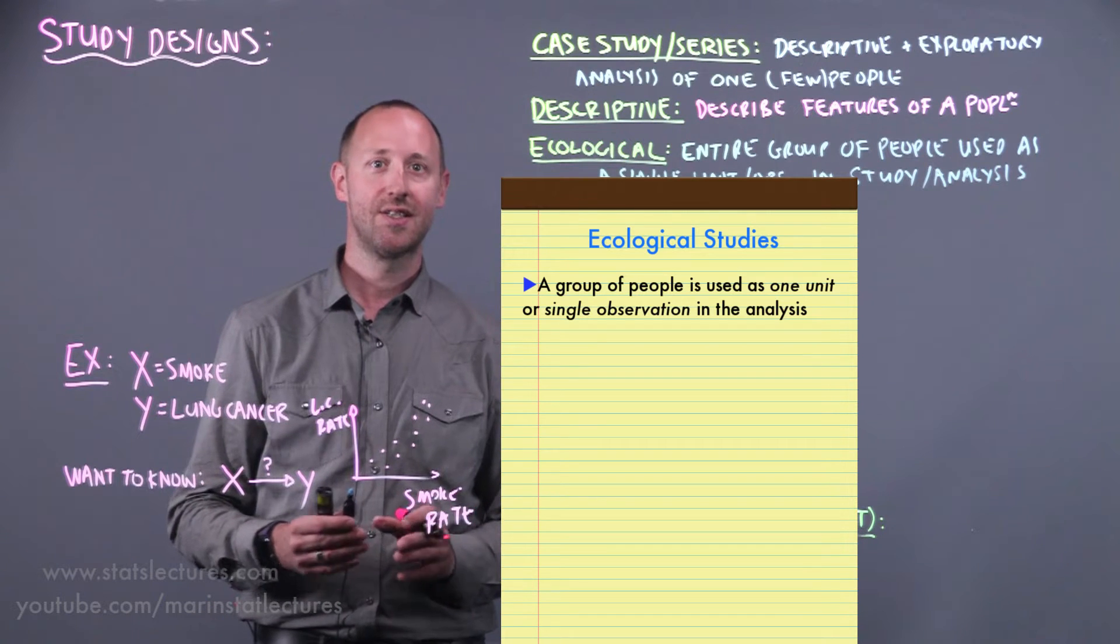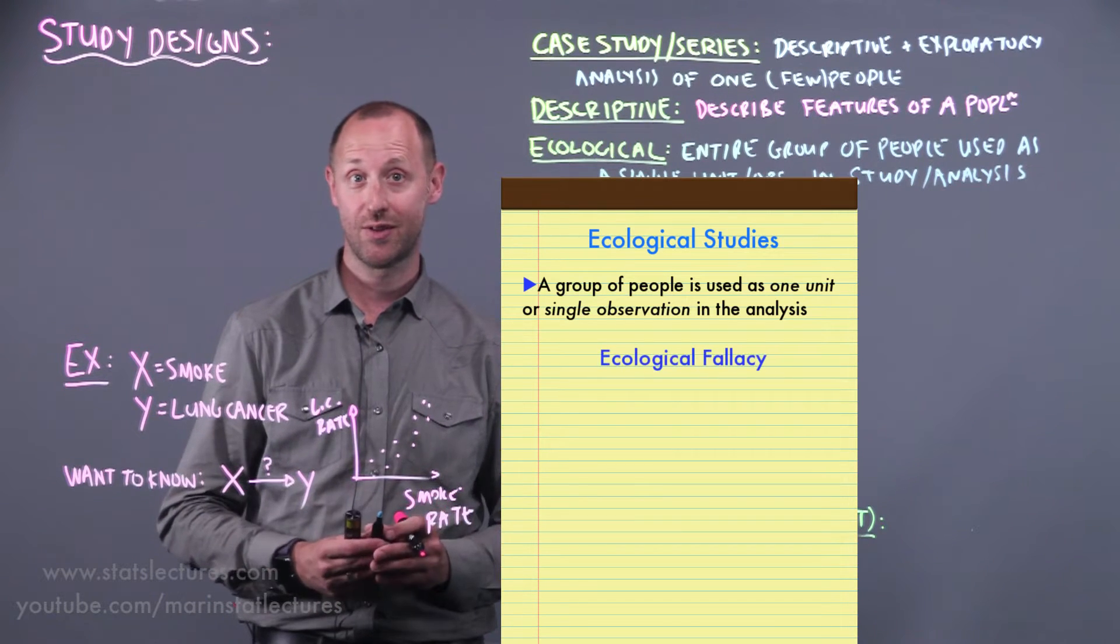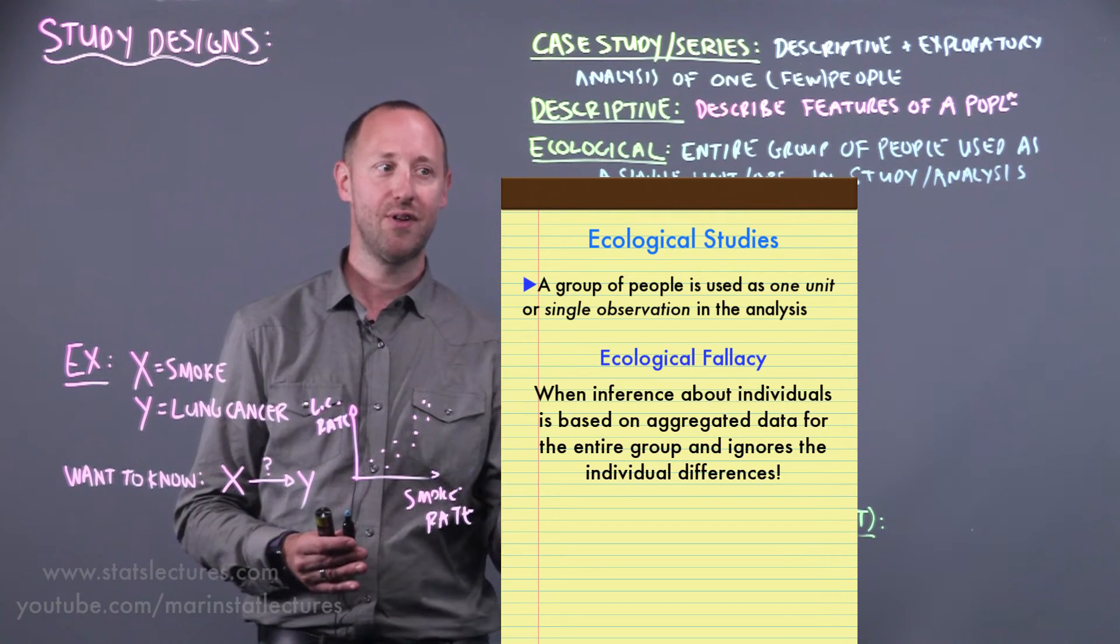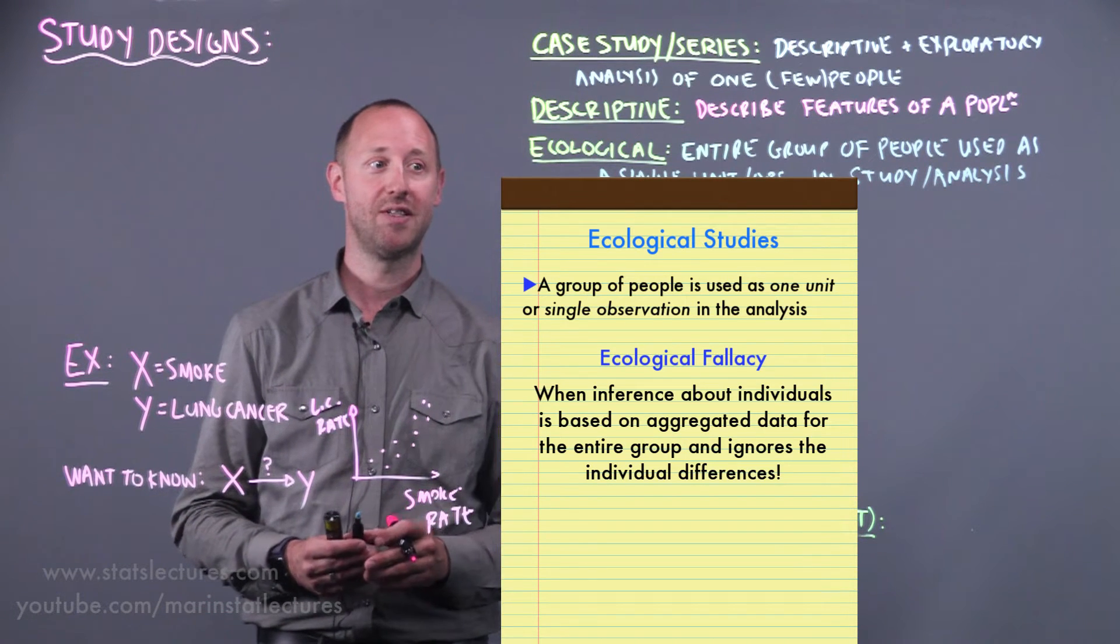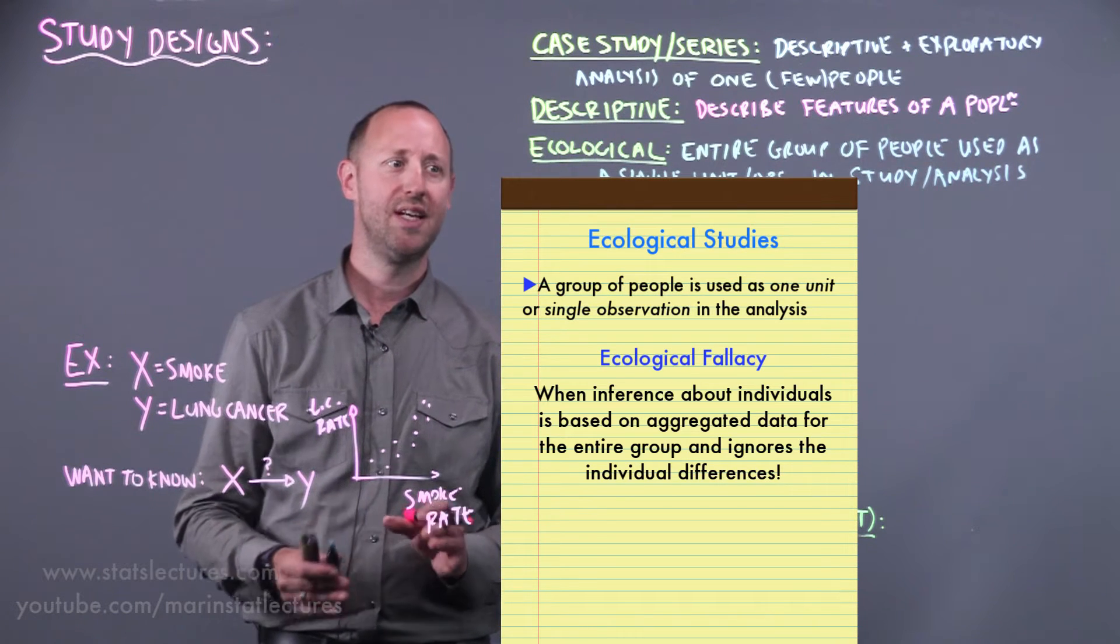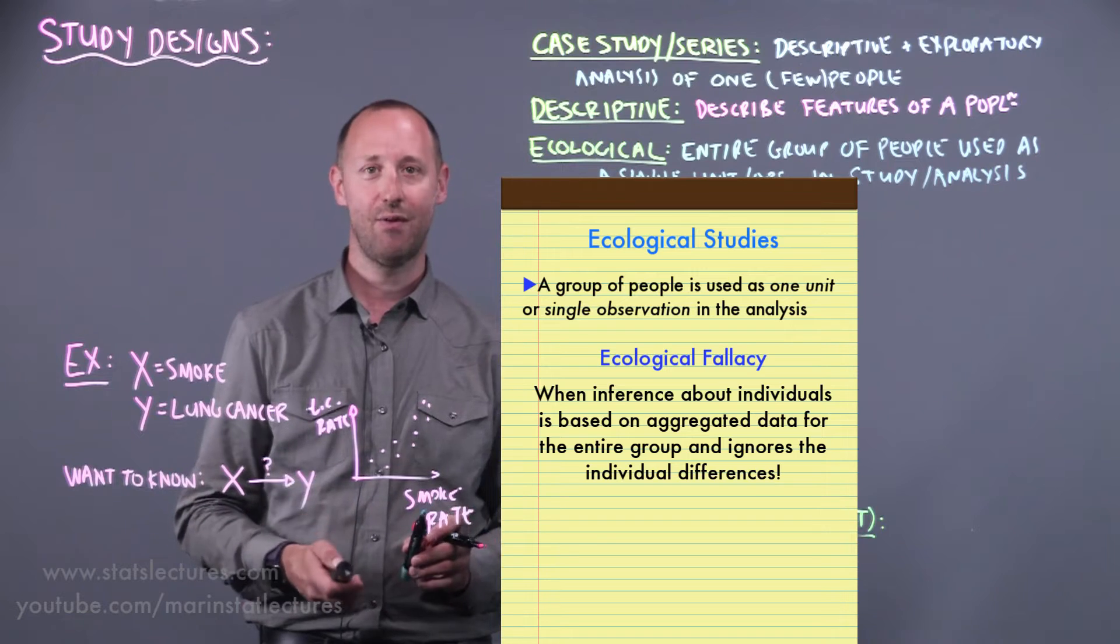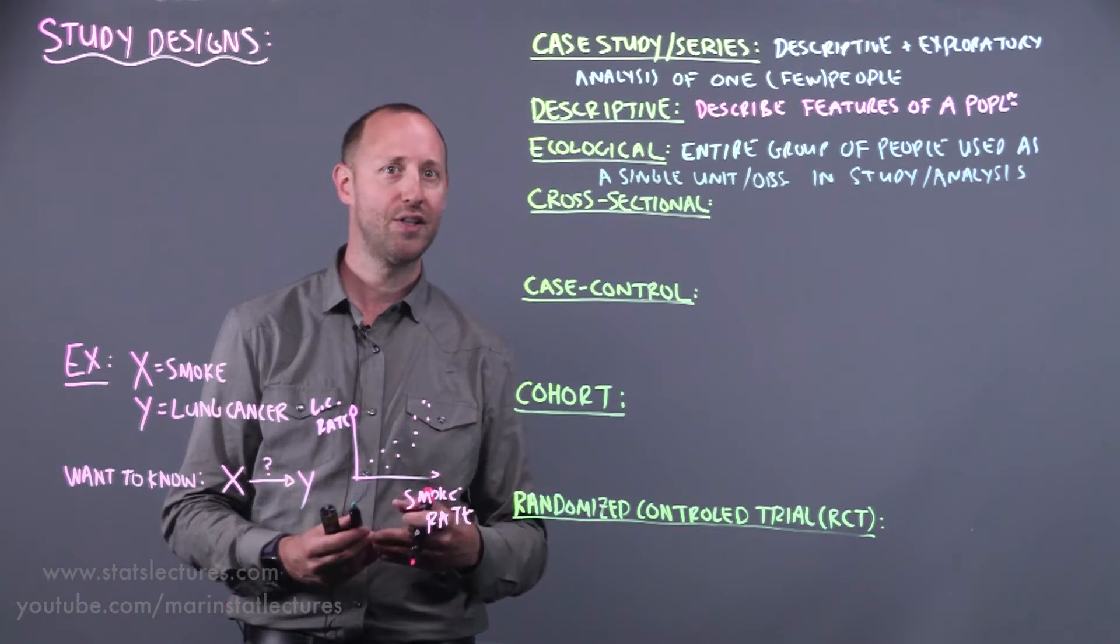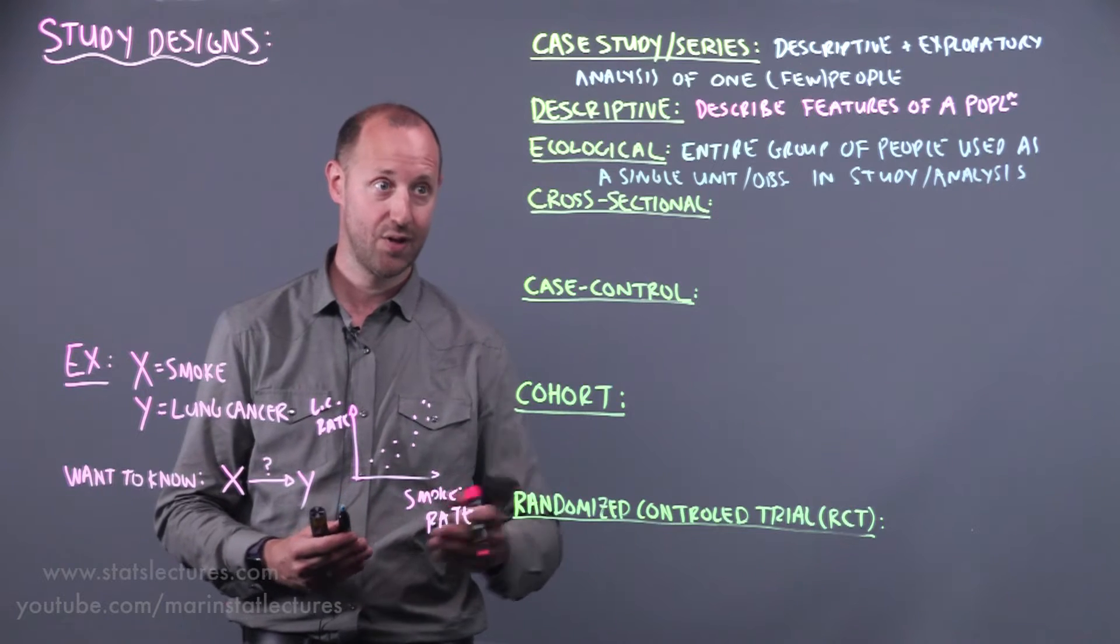These sorts of studies suffer from what gets called or what gets known as the ecological fallacy, where inference about individuals is based on aggregated statistics collected for an entire group. In other words, it ignores the individual differences and treats everyone as being the average in the entire population. But they are a good stepping stone in providing stronger evidence.